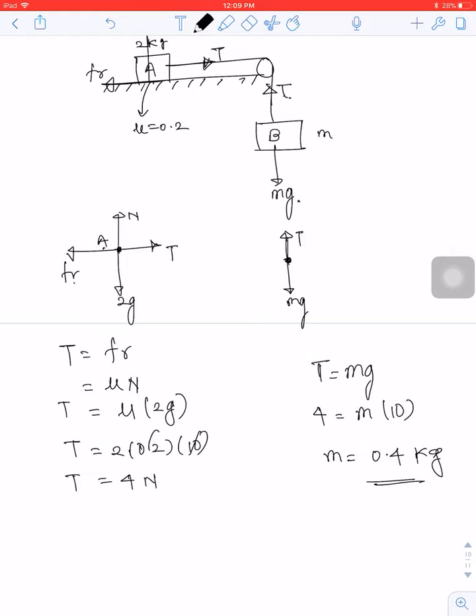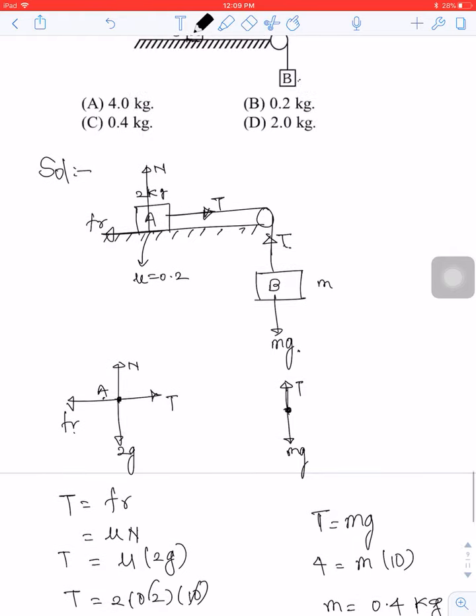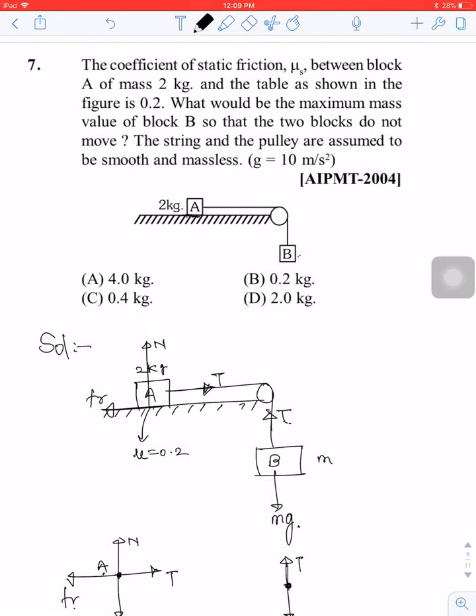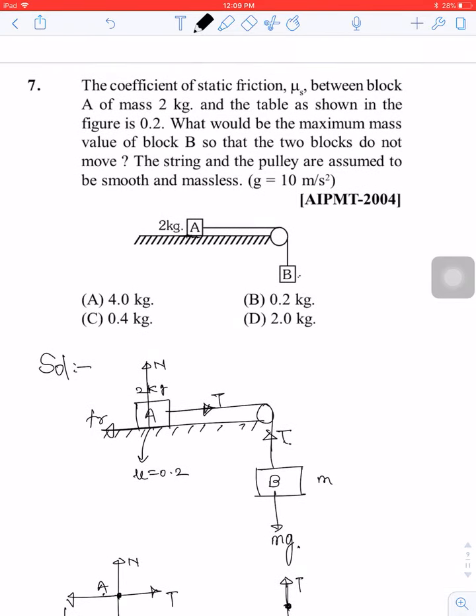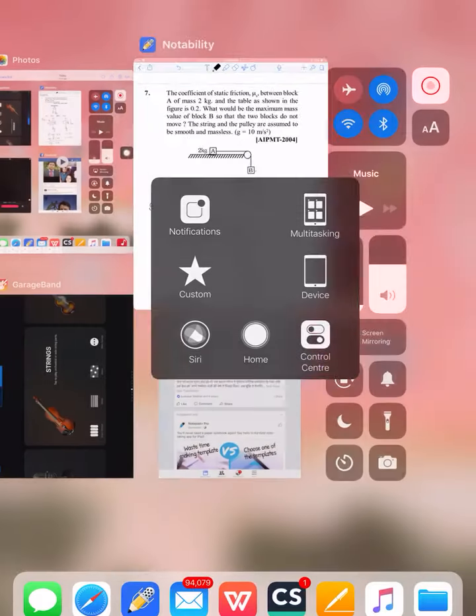If block B is equal to 0.4 kg, then the system is in equilibrium position and will not move. The answer is option C.